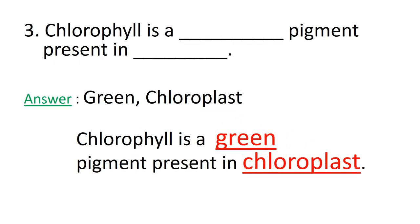Question number 3: Chlorophyll is a dash pigment present in dash. Chlorophyll is a green pigment which is present in the chloroplast.